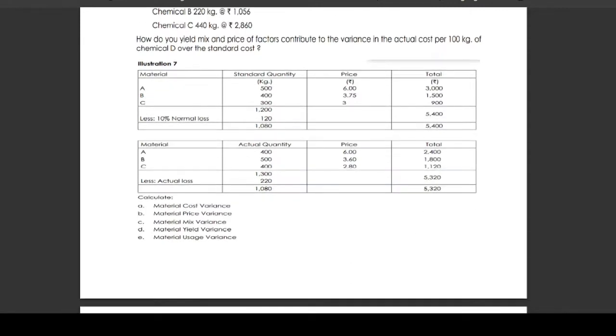Illustration number seven. They have given for materials A, B, C the standard quantity, standard price, and normal loss. They have given the actual quantity and actual price. For this illustration, you are required to calculate material cost variance, material price variance, material mix variance, material yield variance, and material usage variance.